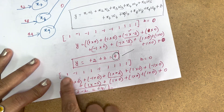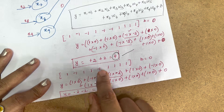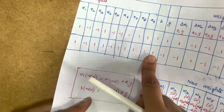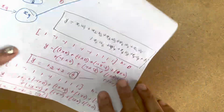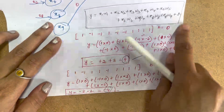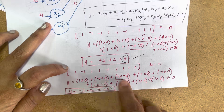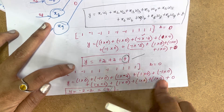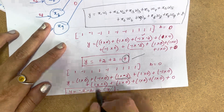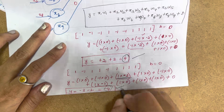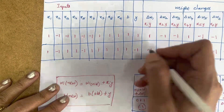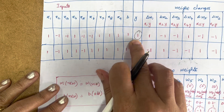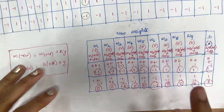Now checking the second input pair (1, −1, 1, 1, −1, 1, 1, 1, 1): Y = 1×0 + (−1)×0 + 1×(−2) + 1×0 + (−1)×0 + 1×(−2) + 1×0 + 1×0 + 1×0 + 0 = −2 + (−2) = −4. This is a negative value. The first pair gives a positive output and the second pair gives a negative output, confirming the network is correctly trained.